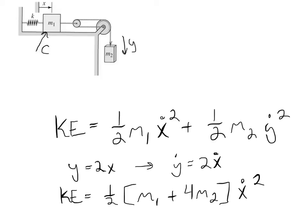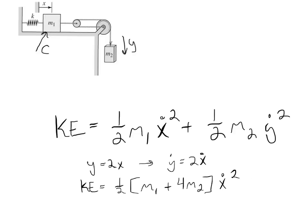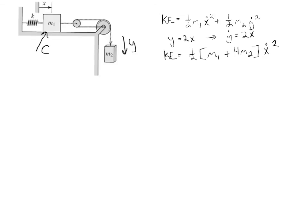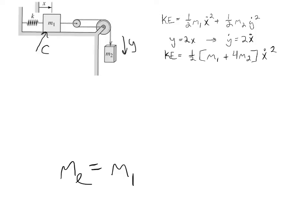So from this, my equivalent mass is actually equal to m1 plus 4m2. So that my equivalent mass me is equal to m1 plus 4m2.